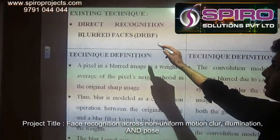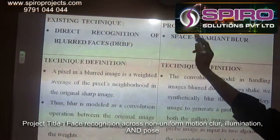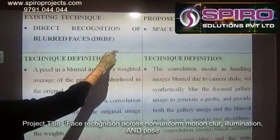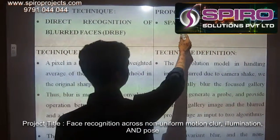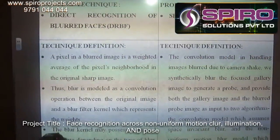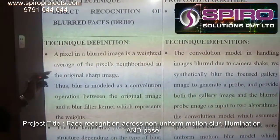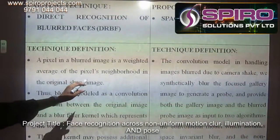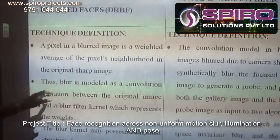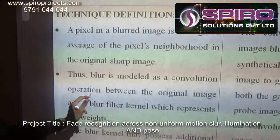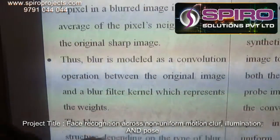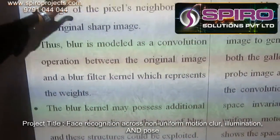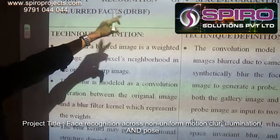Here we are differentiating the existing technique and the proposed technique. In the existing technique we are using direct recognition of blurred faces, known as DRBF, and in the proposed algorithm we are using space-invariant blur. A pixel in a blurred image is a weighted average of the pixel neighborhood in the original image, and the blurred image is modeled as a convolution operation. The blur kernel possesses an additional structure depending on the type of blur, and this structure could be exploited — this is what is performed in DRBF.